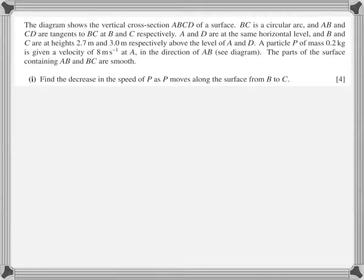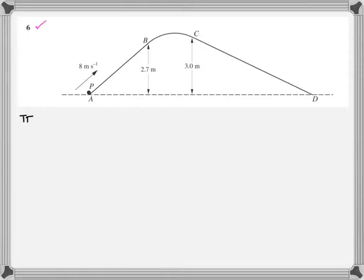The diagram shows the vertical cross-section ABCD of a surface. BC is a circular arc. AB and CD are tangents. A and D are at the same horizontal level. Corresponding heights are given above the ground level. A particle mass is 0.2 kg. Velocity is 8 meter per second. The parts of the surface containing AB and BC are smooth. Find the decrease in the speed of the particle P as P moves along the surface from B to C. Now, what is the first thing? The very first thing is that since AB and BC are smooth, there is no involvement of work done against any kind of resistance, any kind of friction. That means it's a simple application of principle of conservation of energy.